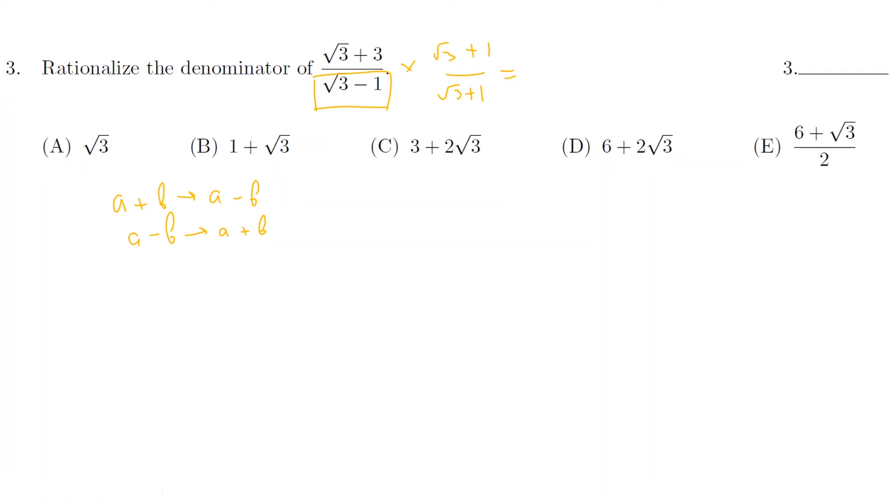So the top is, I'll just follow the top. It's 3 plus root 3 plus 3 root 3 plus 3 over and the bottom is going to be difference of squares. So it's going to be root 3 squared minus 1 squared. So the top is 6 plus 4 root 3. The bottom is 3 minus 1. So 6 plus 4 root 3, the bottom is 2. And if I just cancel, divide the top by two, both sides, it's going to be 3 plus 2 root 3. It is c.